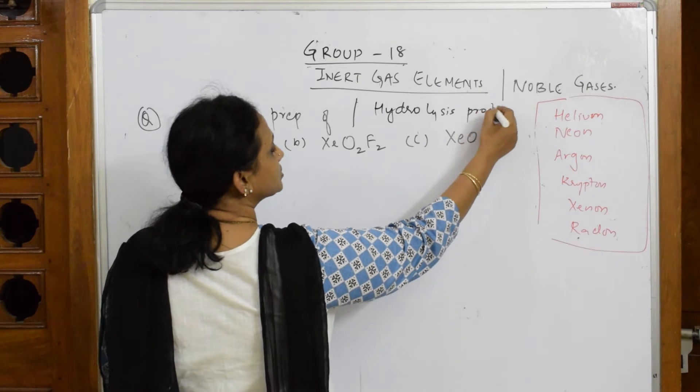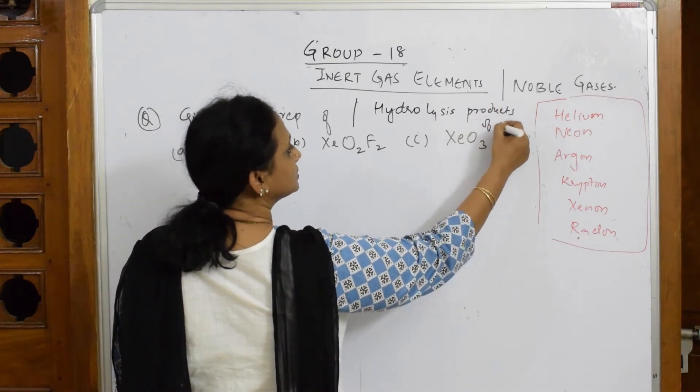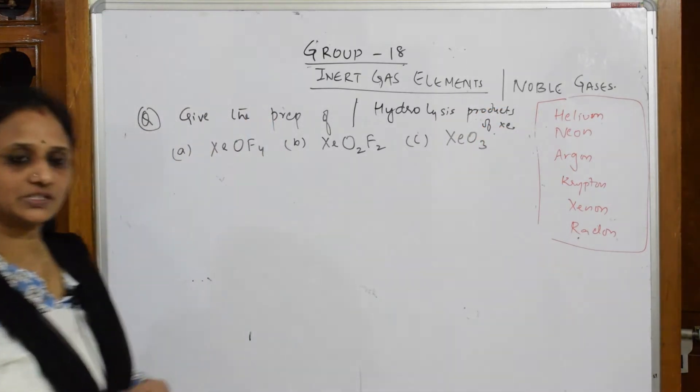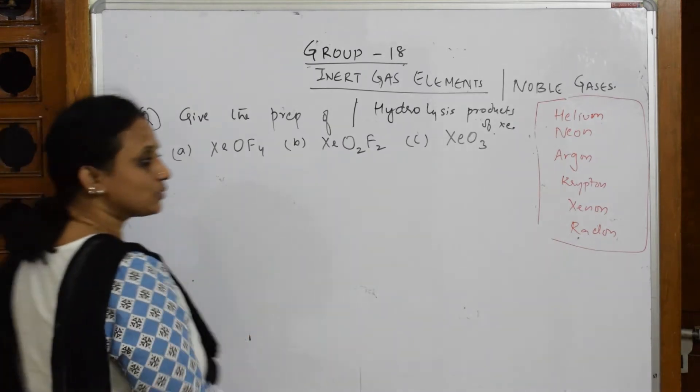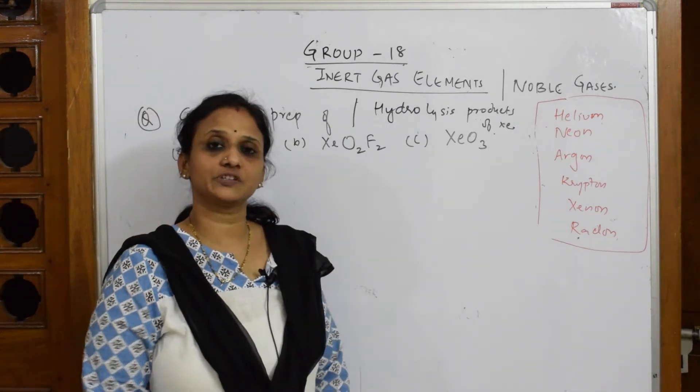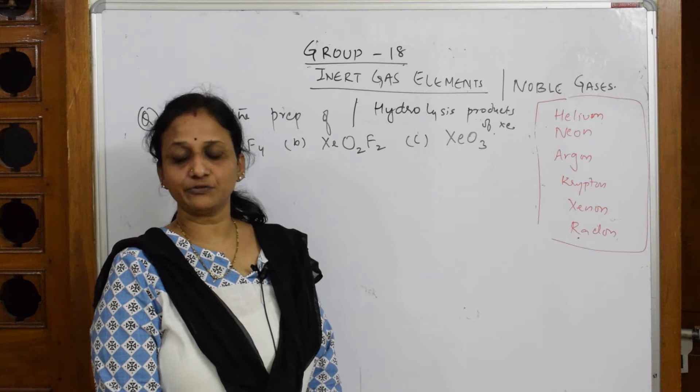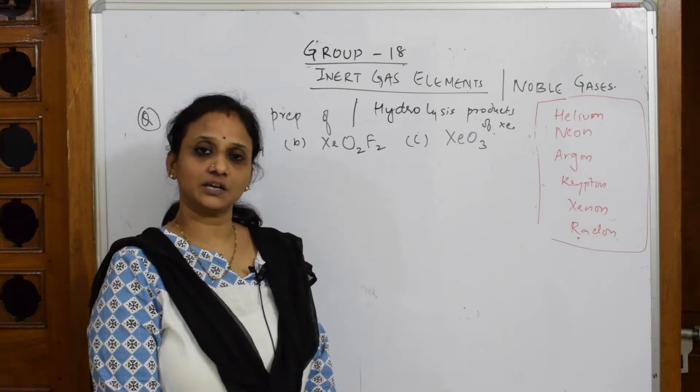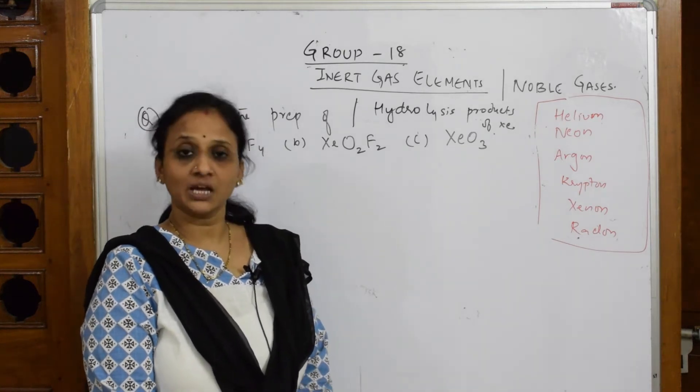Both questions are the same. We've already studied the three types of xenon fluorides: XeF2, XeF4, and XeF6. Now we are going to prepare the hydrolysis products from XeF6.